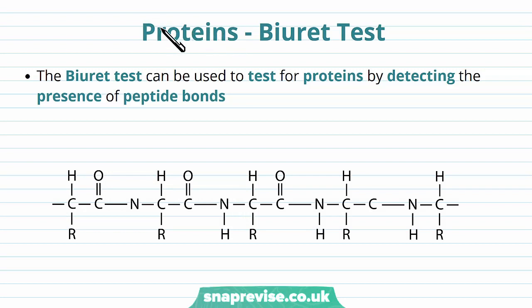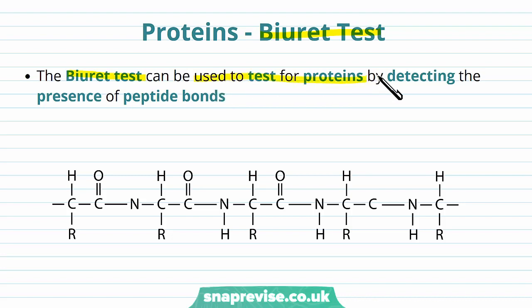In order to test for the presence of proteins in a sample, we have to use the biuret test. The biuret test can be used to test for proteins by detecting a particular feature in proteins, which is the presence of peptide bonds.